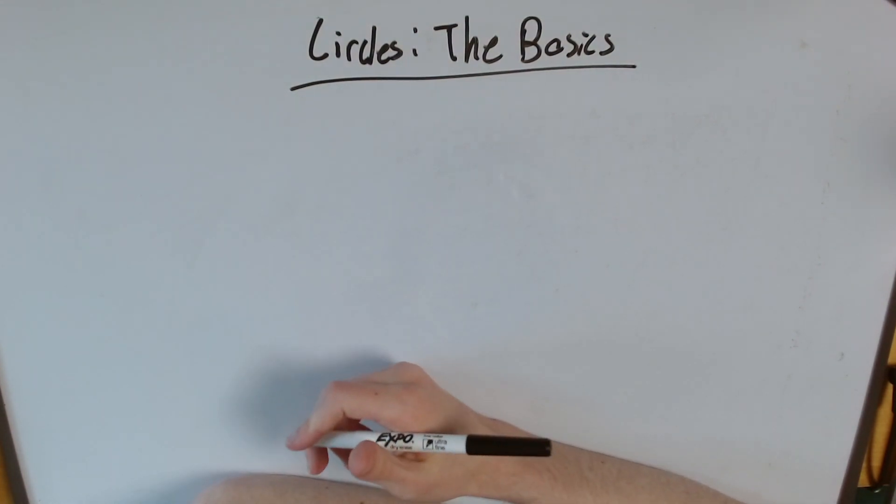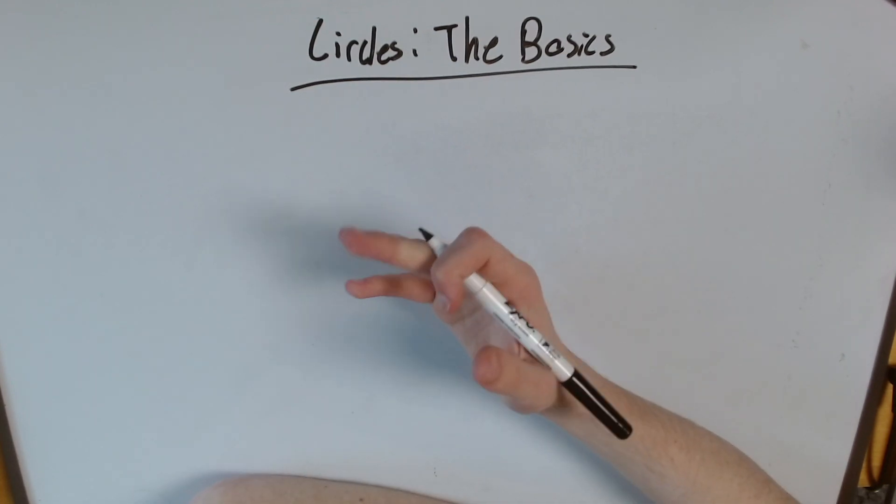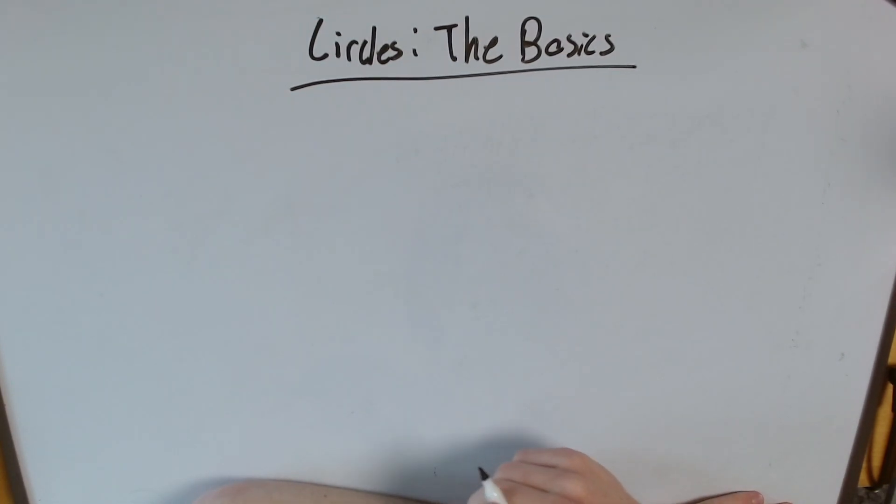So we've been dealing with polygons of various sorts—triangles, squares, rectangles, regular polygons—but they all had one defining factor. They had more than one side.